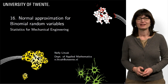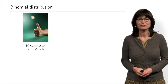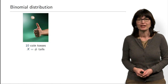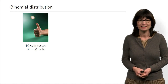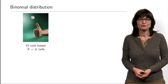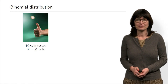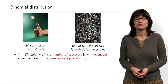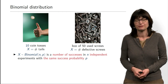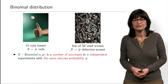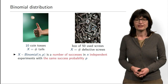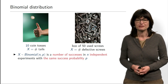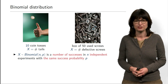Binomial distribution is a distribution that appears very often, and we already discussed this in previous examples. For example, if you toss a coin 10 times — a classical example in probability theory — and you denote by X the number of tails, then X will have binomial distribution. Also, if you have a box of screws which are used and some of them are defective, and each can be defective with the same probability and they are independent of each other, then X, the number of defective screws, also has binomial distribution.